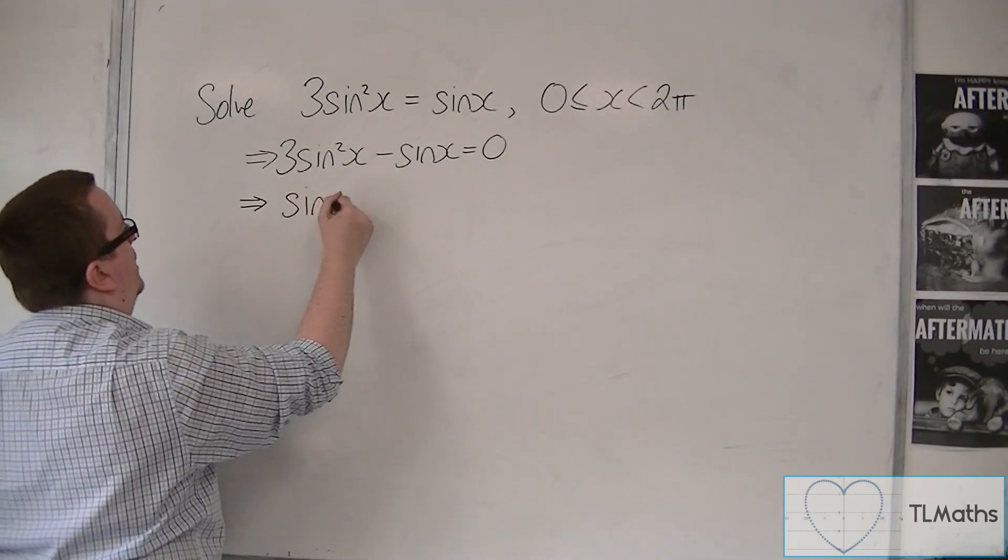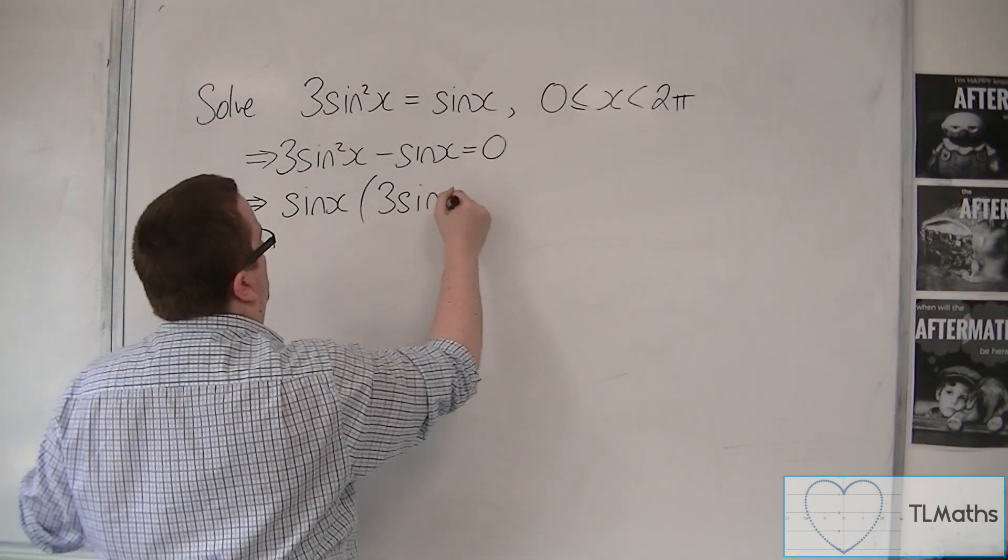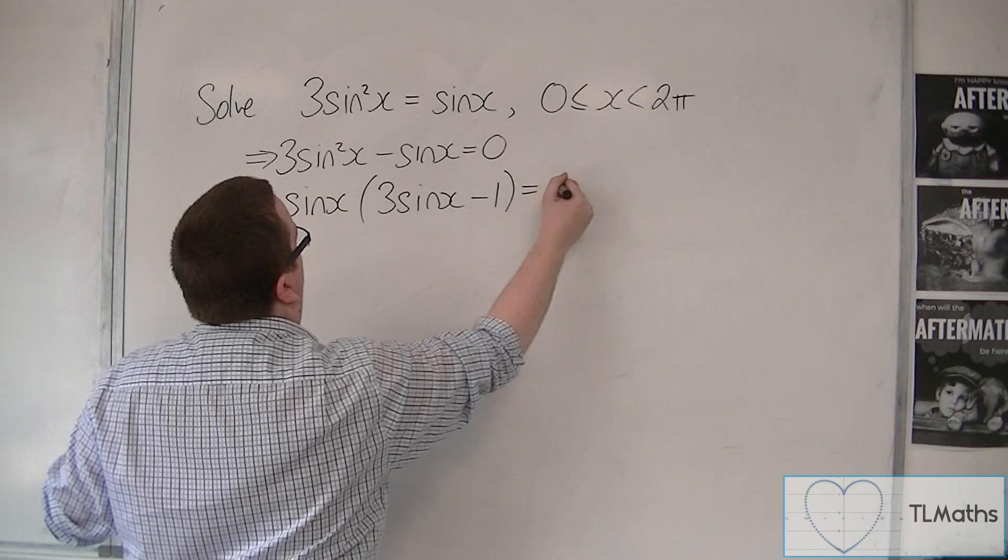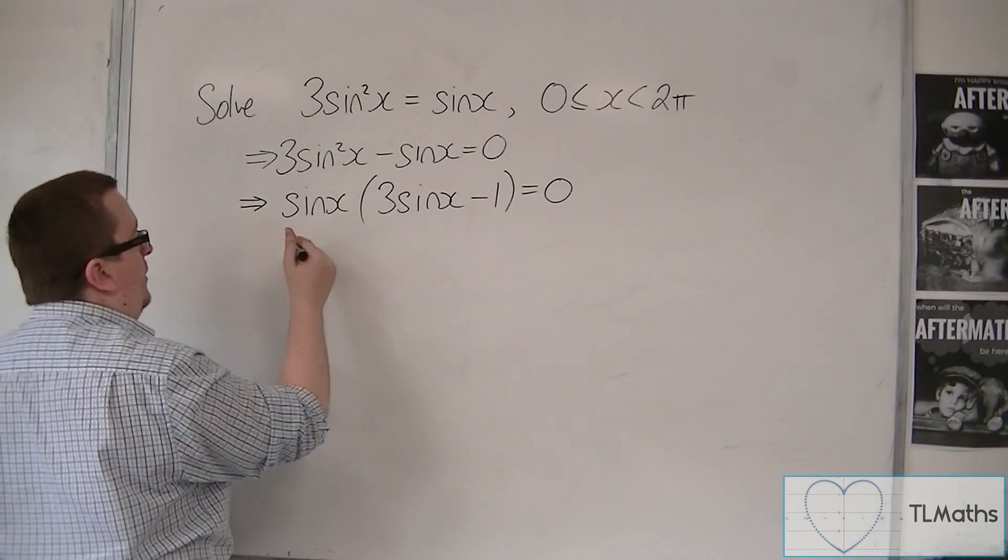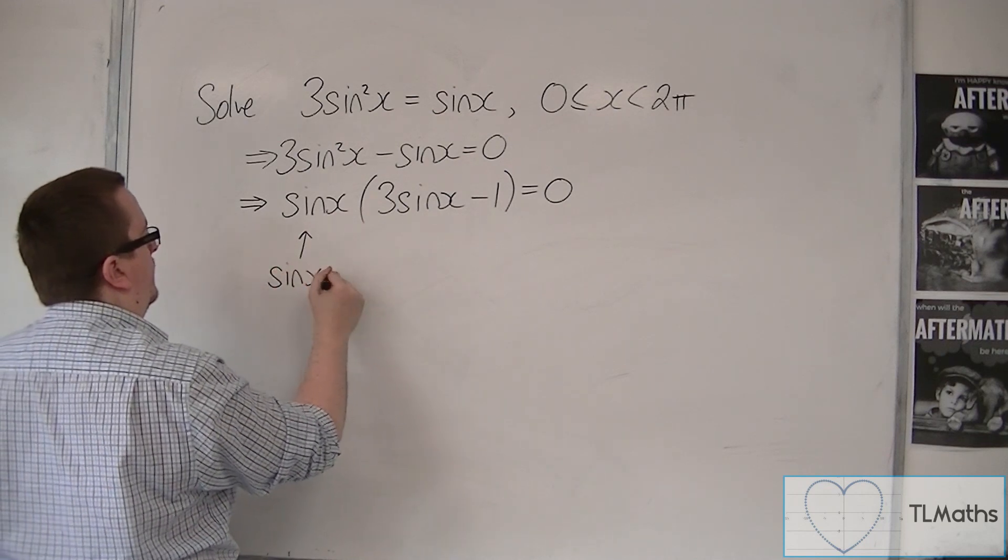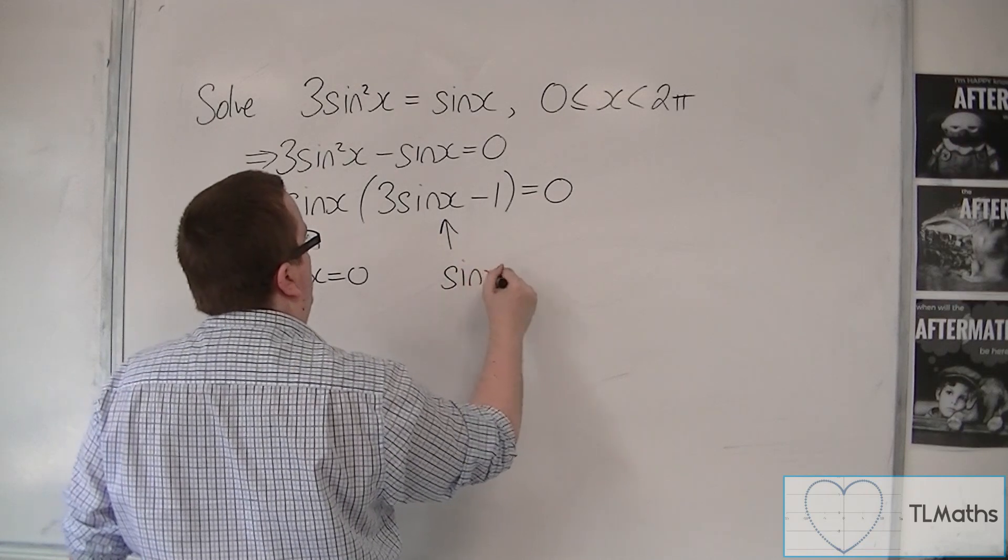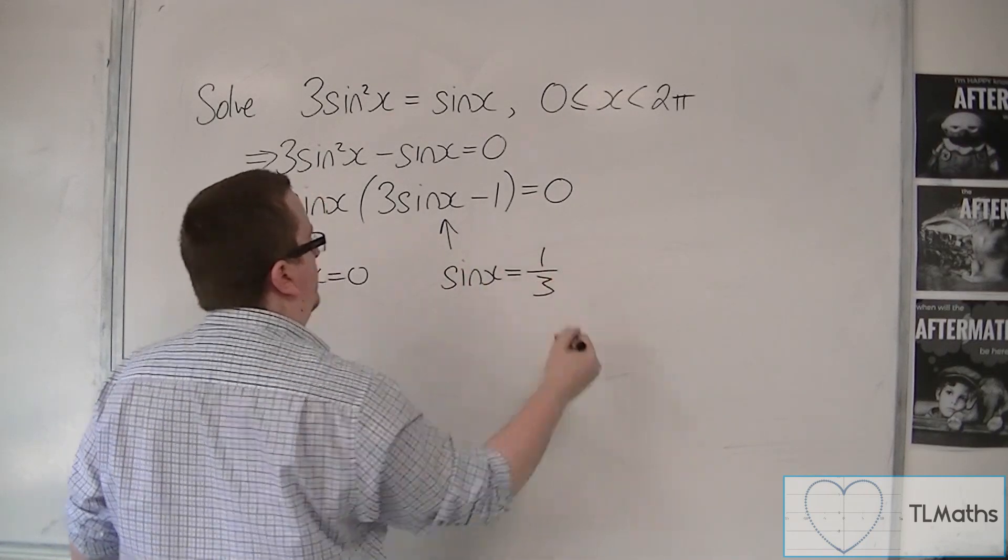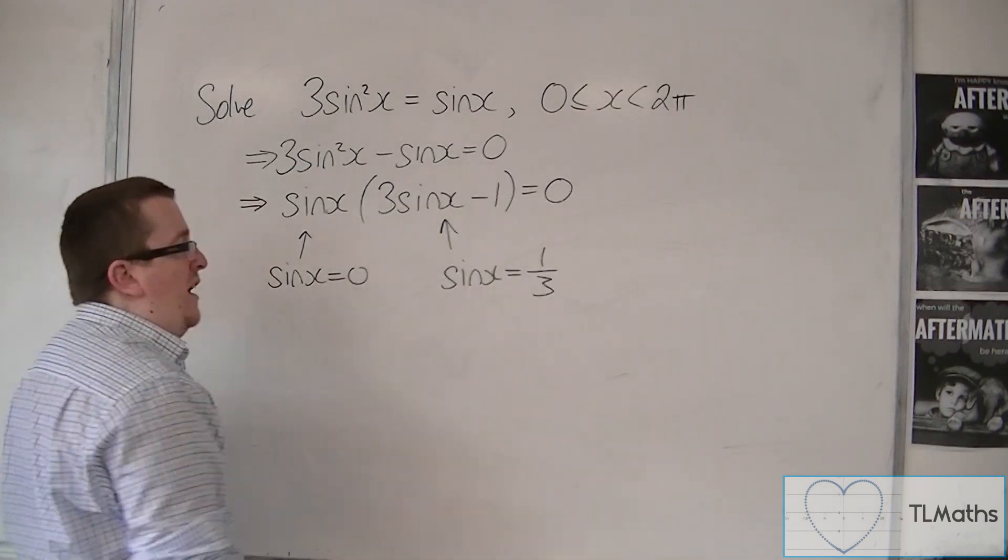So we can bring sine x out of a single bracket, and we're going to have 3 sine x minus 1 inside the bracket. So either sine x is 0 or sine x is equal to 1 third. And we have two equations here that we now must solve.